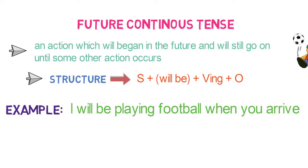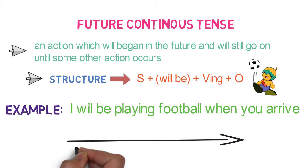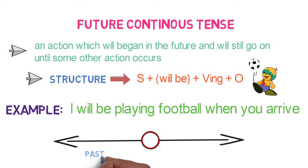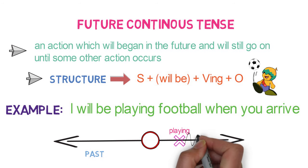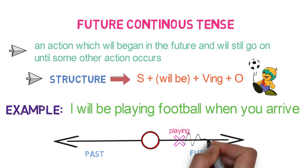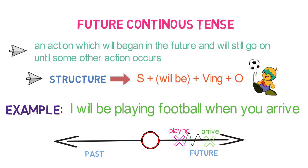Here I am predicting a future action — playing will go on until some another action happens. In the timeline, my action of playing football will be on the right side and will go on and on until another action of arriving comes.